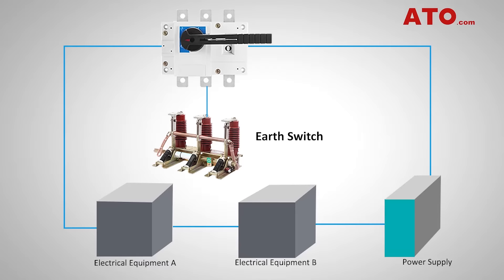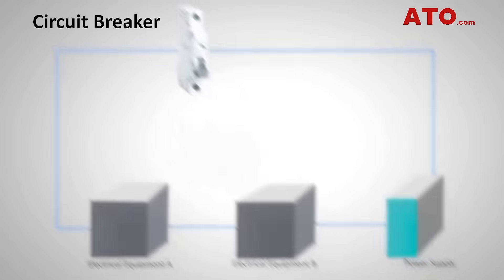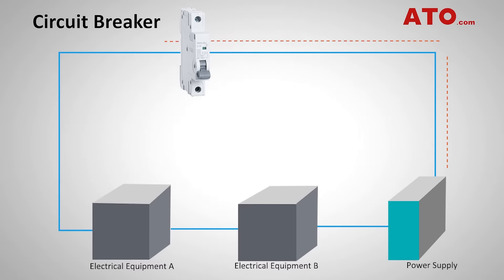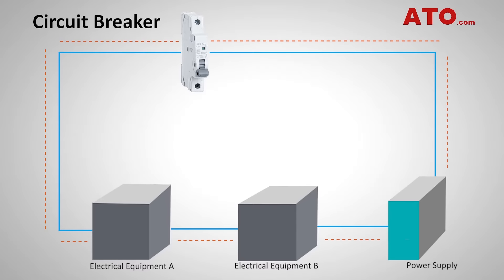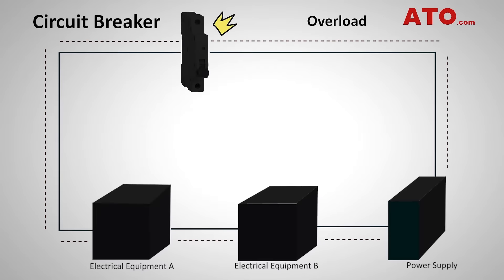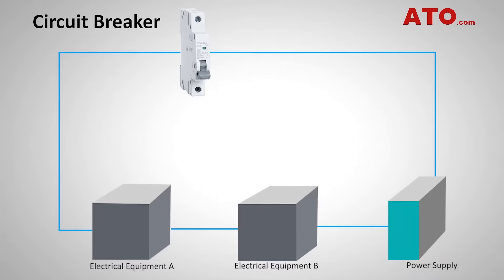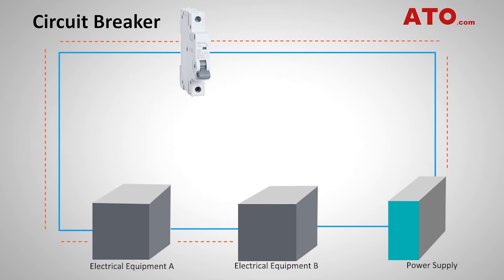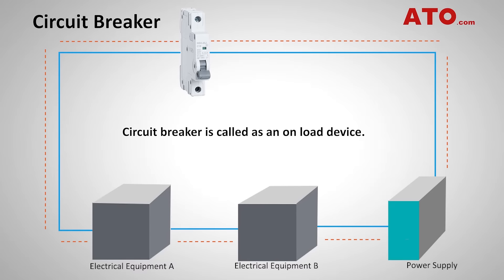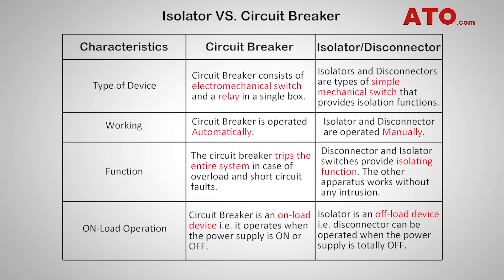A circuit breaker is an electrical switch designed to protect an electrical circuit from damage caused by overcurrent, overload, or short circuit. Its basic function is to interrupt current flow after protective relays detect a fault. A circuit breaker can make, carry, and break the current under standard circuit conditions. Hence, it is called an on-load device. The differences between isolator and circuit breaker are tabulated as follows.